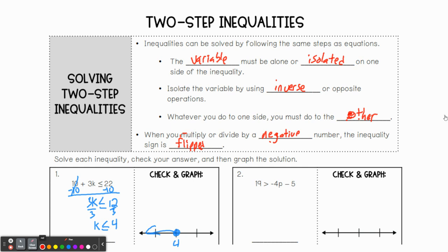All right, number two. Let's change colors here. 19 is greater than negative 4 times p minus 5. So again, we said our goal is to isolate the variable. So we want to isolate the variable p here. And how do we do that? We get rid of this negative 5. Remember, we're using inverse operations. So when I see subtract, I know I need to add. So let's go ahead and add 5 to both sides of my equation. We should get 24 is greater than a negative 4p.